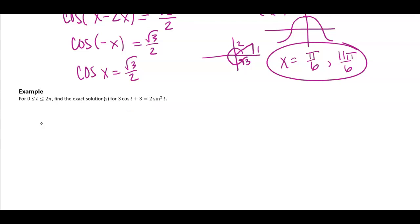So that's going to be 3 cosine t plus 3 equals 2. And then sine squared is going to be replaced with 1 minus cosine squared. Remember sine squared plus cosine squared is 1, so if I subtract this over, sine squared equals 1 minus cosine squared.